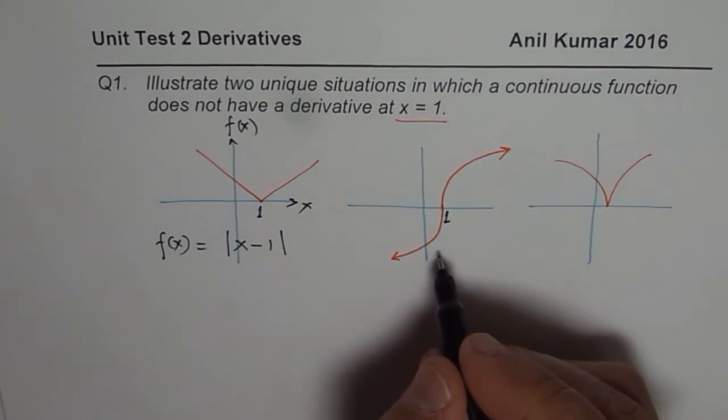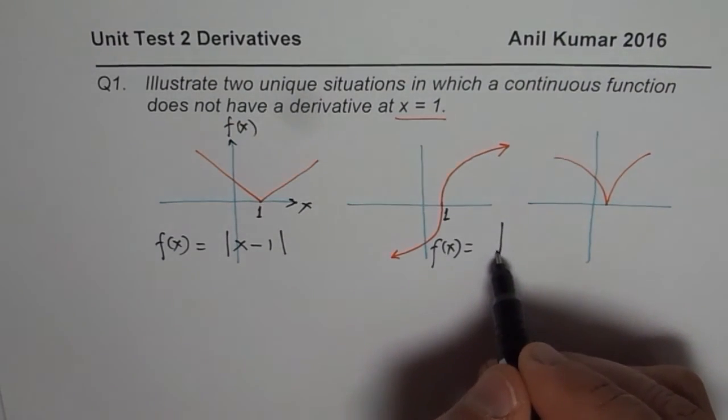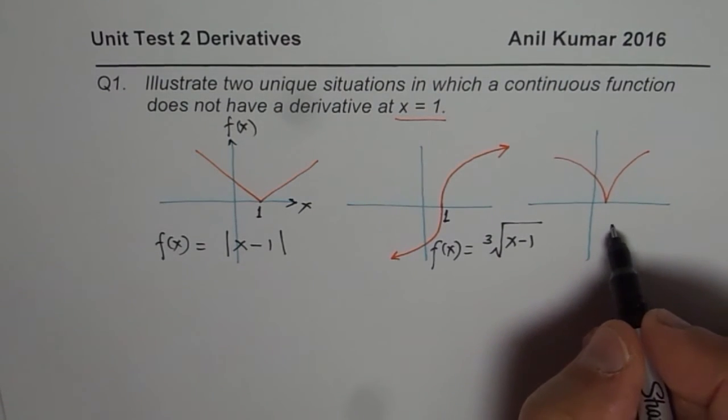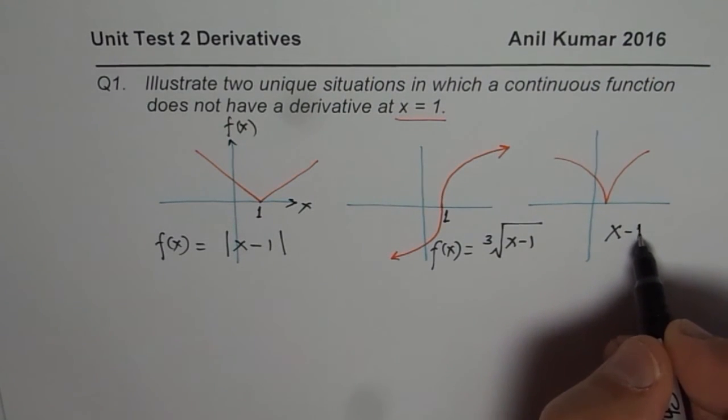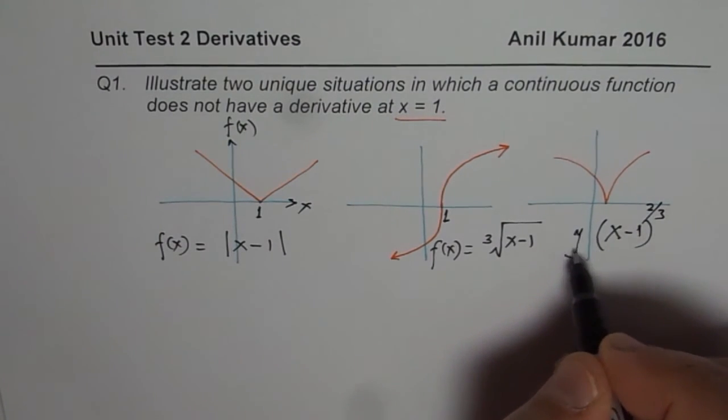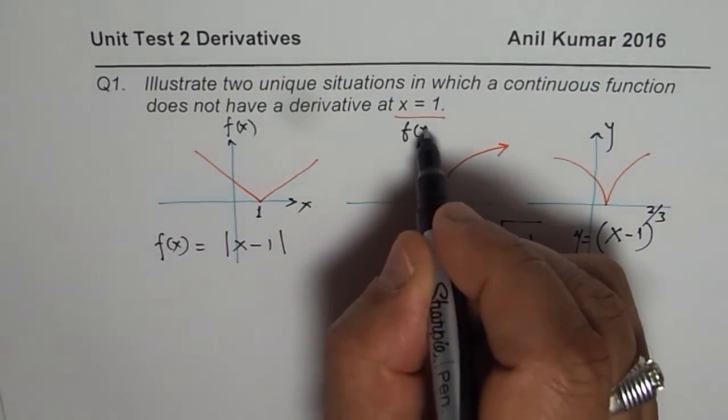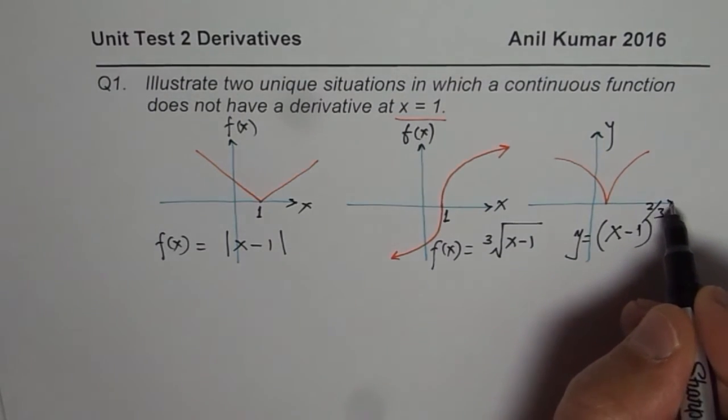And here it is f(x) equals to, this is cube root, so cube root of (x minus 1). And this is x to the power of 2 over 3. But that function has been moved one unit to the right. So to the power of 2 over 3. So this is, let's say, y equals to that. So these are the functions which will not have derivative at x equals to 1.